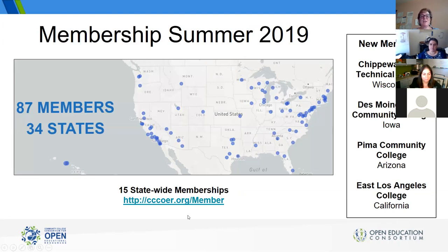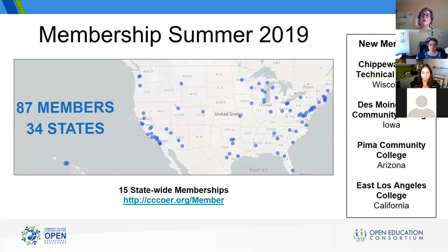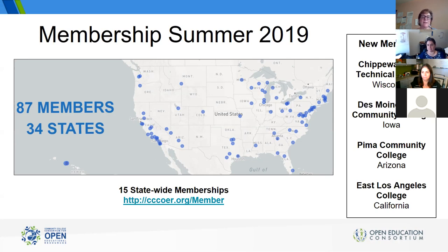Ultimately this is about helping faculty find high-quality OER to help their students be successful — we've been doing this for over 10 years. This is a map of our members throughout the country: we're in 34 states. Our new members this summer include Chippewa Valley Technical College in Wisconsin, Des Moines Area Community College in Iowa, Pima Community College in Arizona, and East Los Angeles College in California. Welcome to our new members!